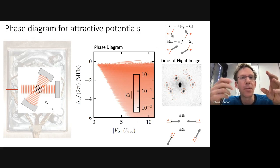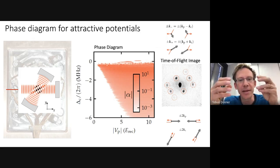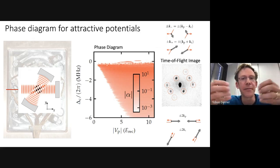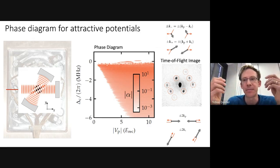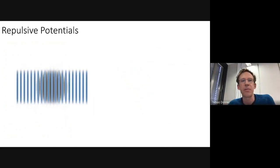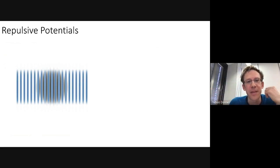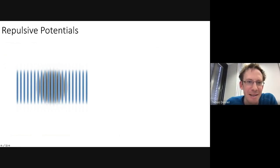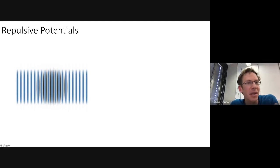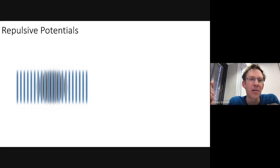Now, what happens if we go to a repulsive potential by tuning the laser to the blue side of the atomic resonance? Now atoms are pushed to dark regions — they want to avoid the light field. With this blue lattice as pump, atoms accumulate where there is no light. One can ask whether self-organization can still occur, whether atoms can still efficiently scatter photons into the cavity despite trying to avoid high intensities.